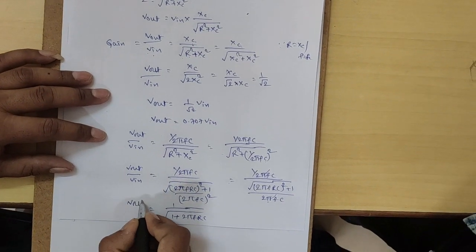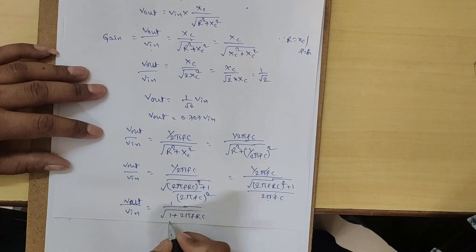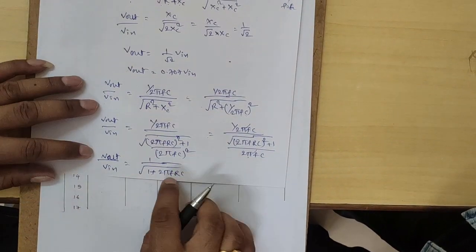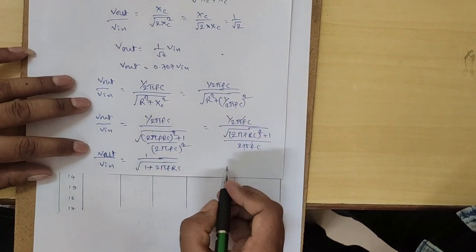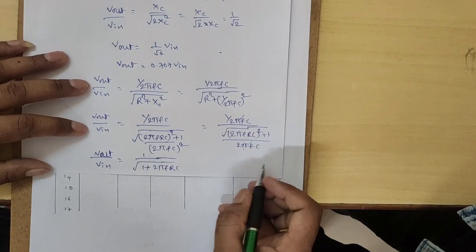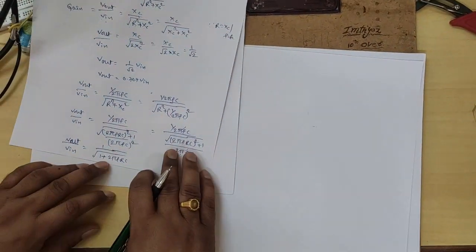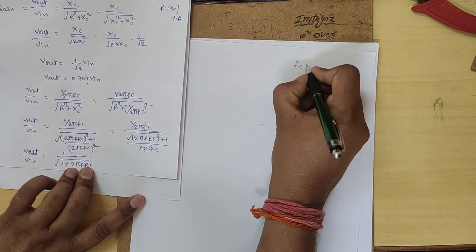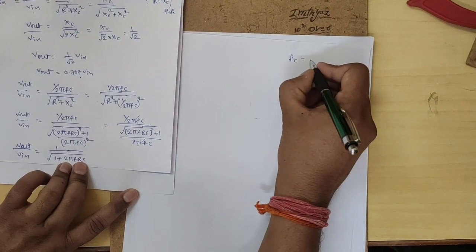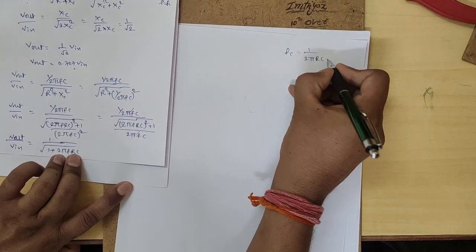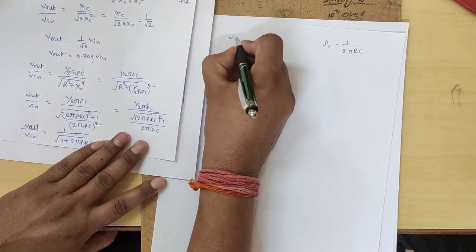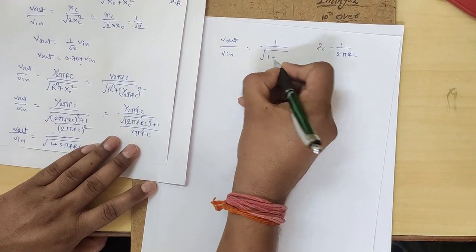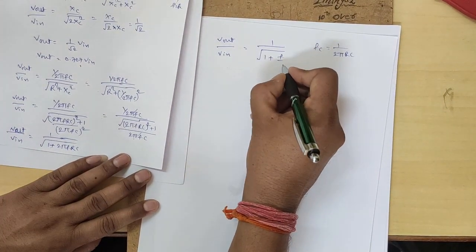So V_output / V_in = 1 / √(1 + (2πF·RC)²). Assuming Fc = 1/(2πRC), we substitute this into the equation. Fc = 1/(2πRC) is the cutoff frequency. Substituting, we get V_output / V_in = 1 / √(1 + (F/Fc)²). Here, Fc = 1/(2πRC) is the cutoff frequency formula.